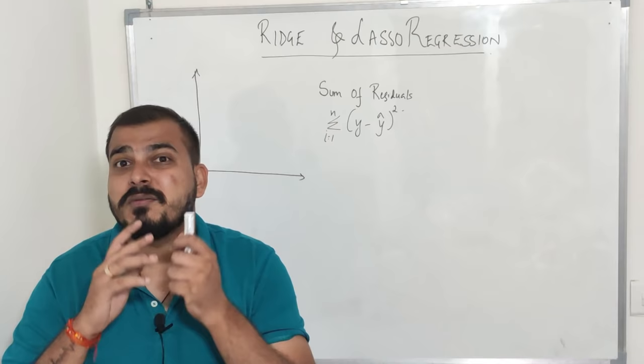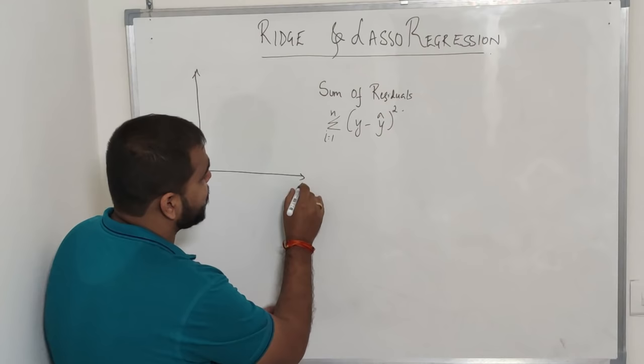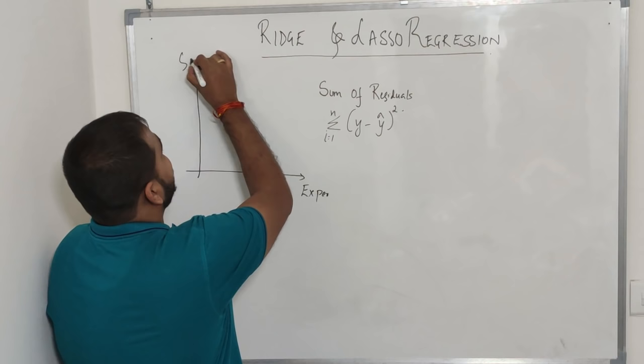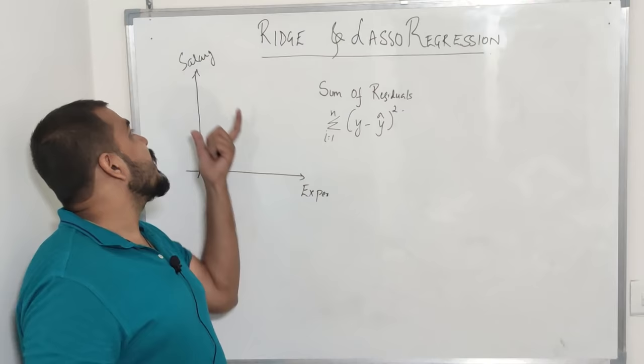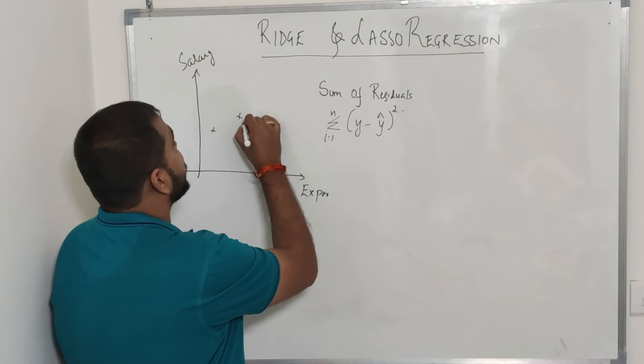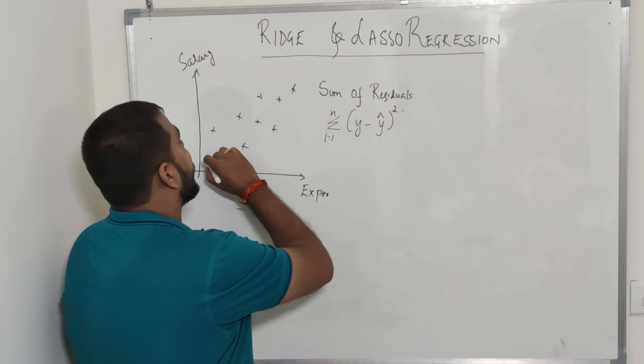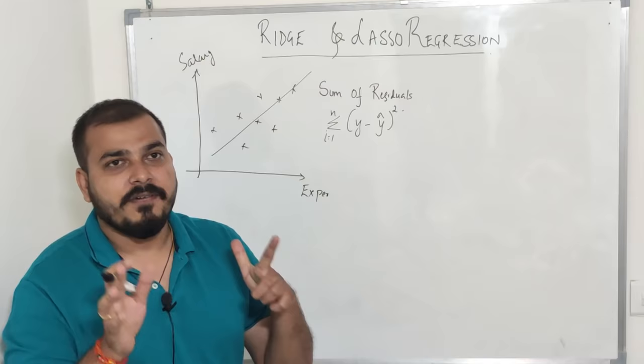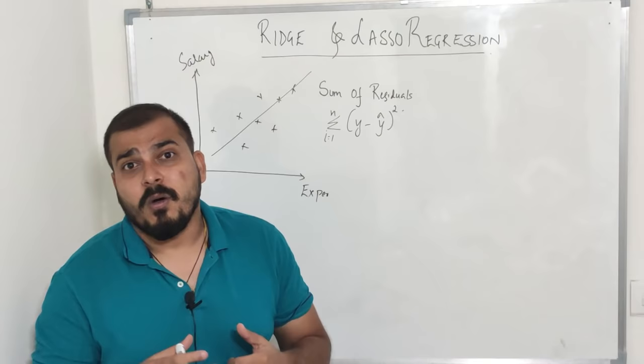Let me give a small overview of linear regression. Suppose I have a parameter like 'experience' on one axis and 'salary' on the other. Based on experience, I need to predict salary. I have some data points and what I do is try to create the best fit line using linear regression. Now, when do we use ridge and lasso regression? We need to find that out.